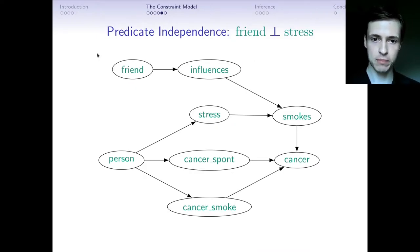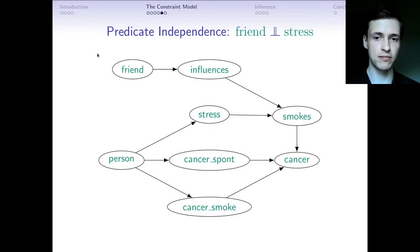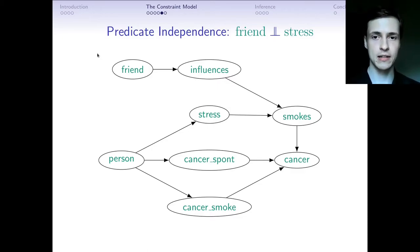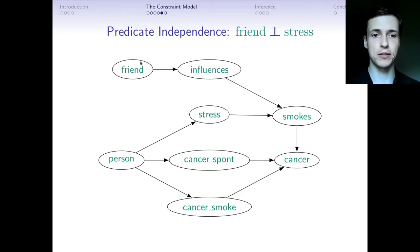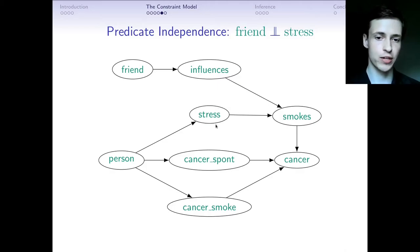Another reason to care about the dependency graph is predicate independence, which can be understood as independence in the underlying probability distribution. Informally, predicates friend and stress are independent if the way we calculate probabilities for friend has nothing to do with the way we calculate probabilities for stress.